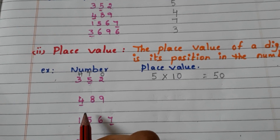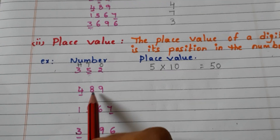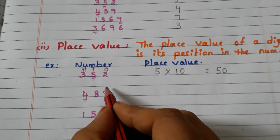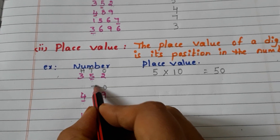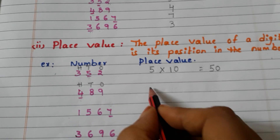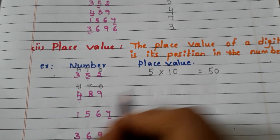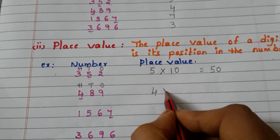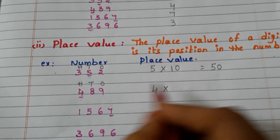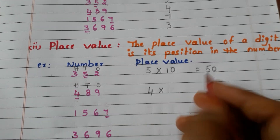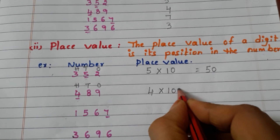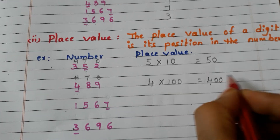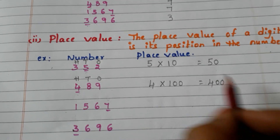Let us go to another example. We have to find out the place value of 4. First, write the places: 1's, 10's, 100's. Write the face value of 4 — the face value of 4 is 4 itself. In which place is 4? The 100's place. So, 4 hundreds are 400. The place value of 4 is 400.